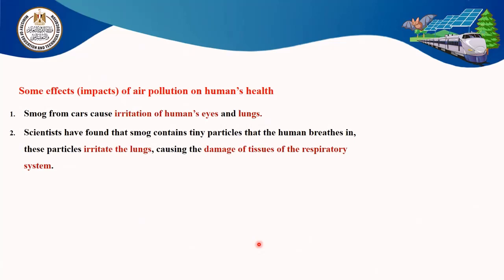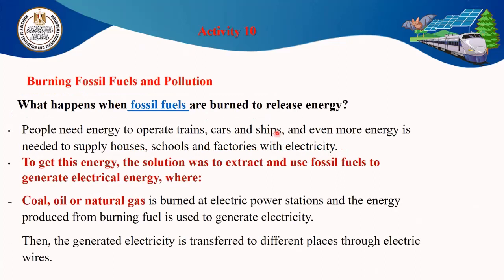Some effects of pollution on the air: smoke causes irritation of human eyes and lungs. Scientists have found that smoke contains small particles. When humans breathe these tiny particles in, they irritate the lungs, causing damage to the tissues of the respiratory system. Burning fossil fuels pollutes the environment, the soil, and the water.